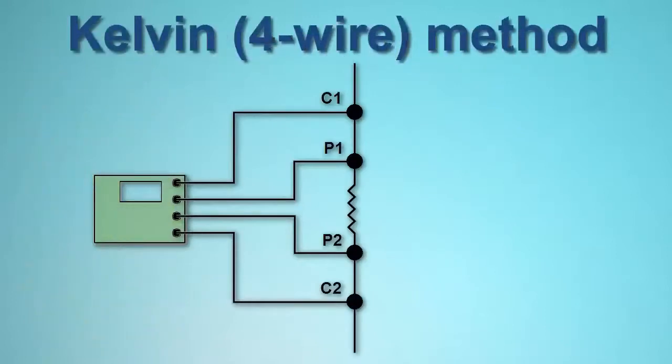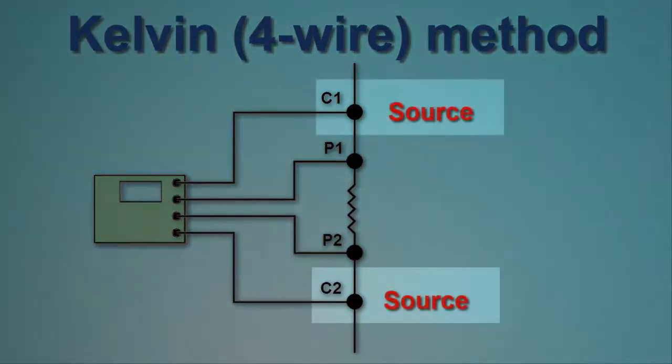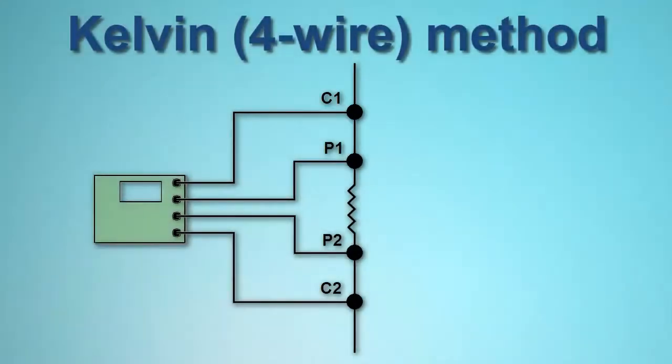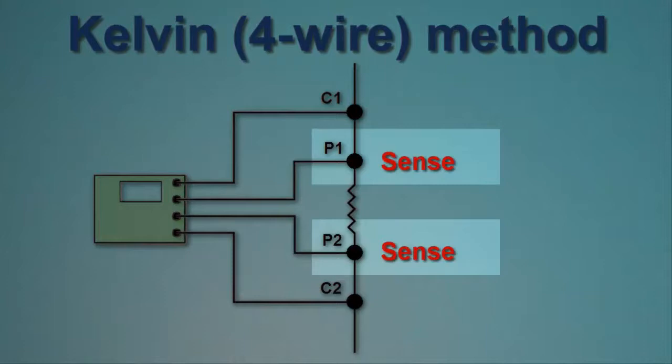Kelvin testing uses two separate pairs of leads. One pair, called the source leads, provide a known quantity of constant current. The second pair, called the sense leads, measures voltage.